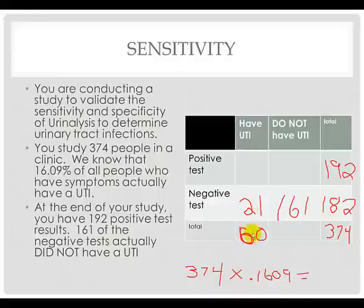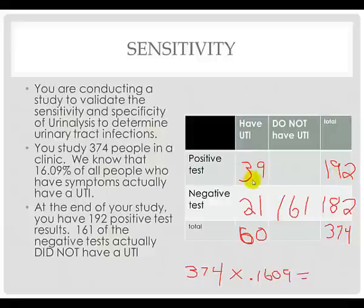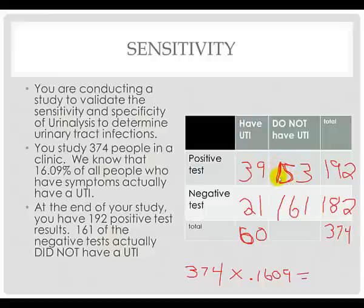That leaves 21 people who had a negative test but did have a UTI. Because there were a total of 60 people who have a UTI and 21 had a negative test result, we know through deduction that 39 had a positive test result. We also know that since 192 positive test results occurred and only 39 actually had the disease, 153 people did not have a UTI. Out of the total, there are 314 people in our study who did not have a UTI.